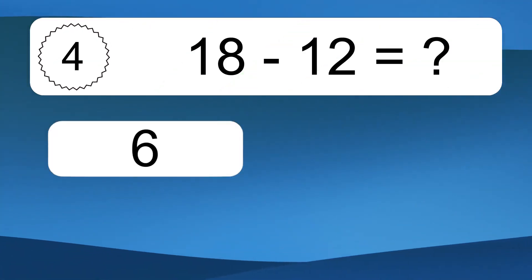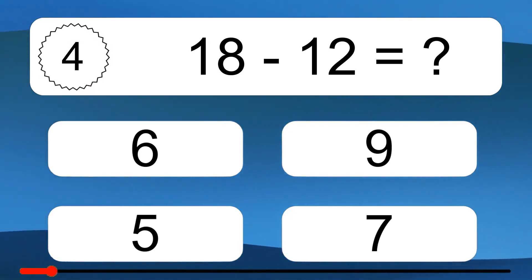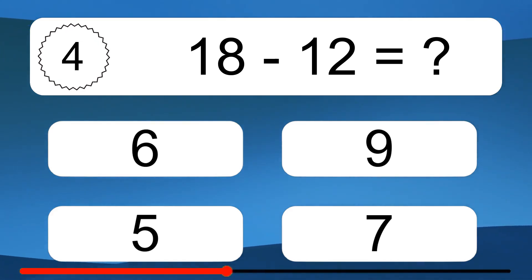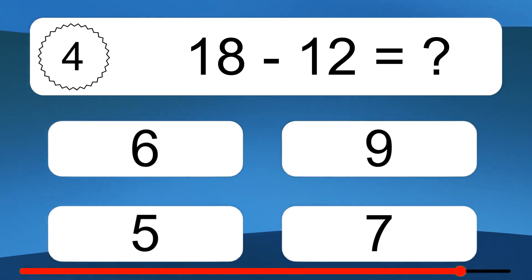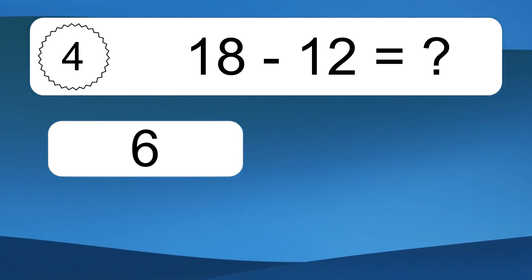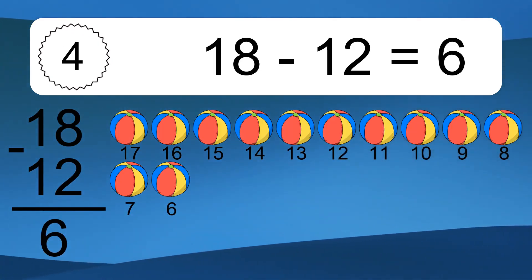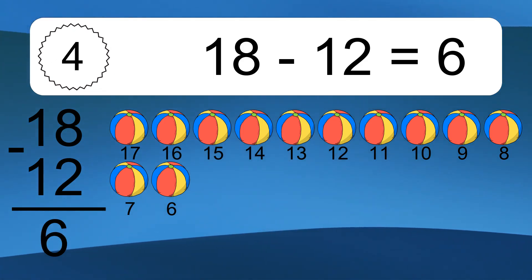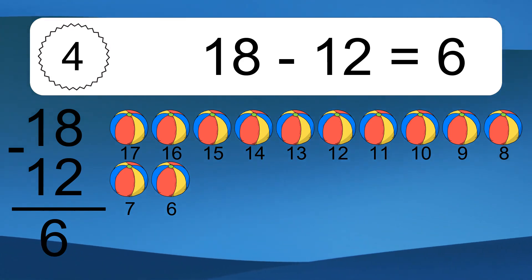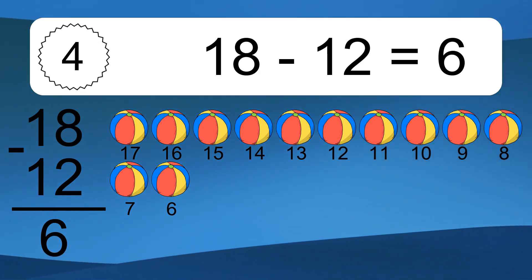18 minus 12 equals what? 18 minus 12 equals 6. Let's count it: 18, 17, 16, 15, 14, 13, 12, 11, 10, 9, 8, 7, 6.